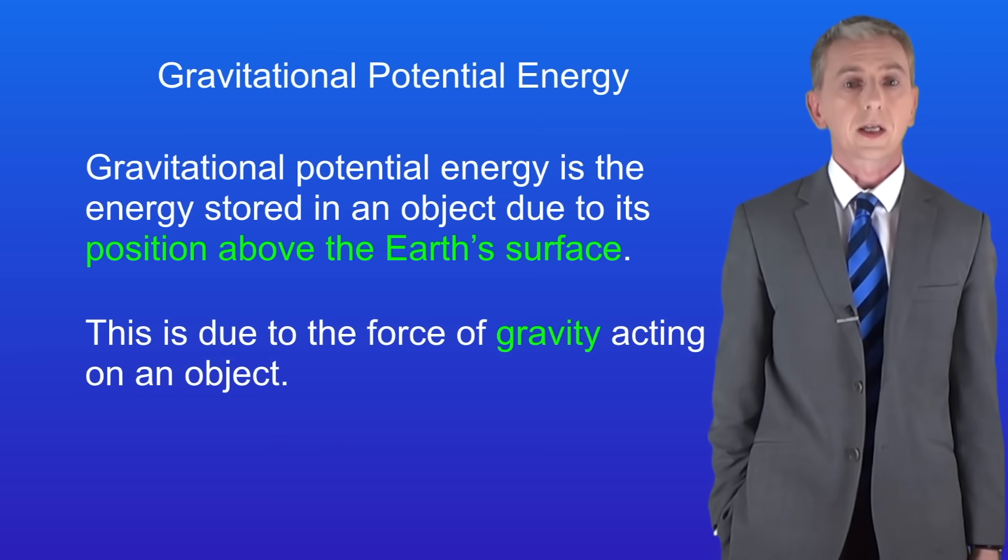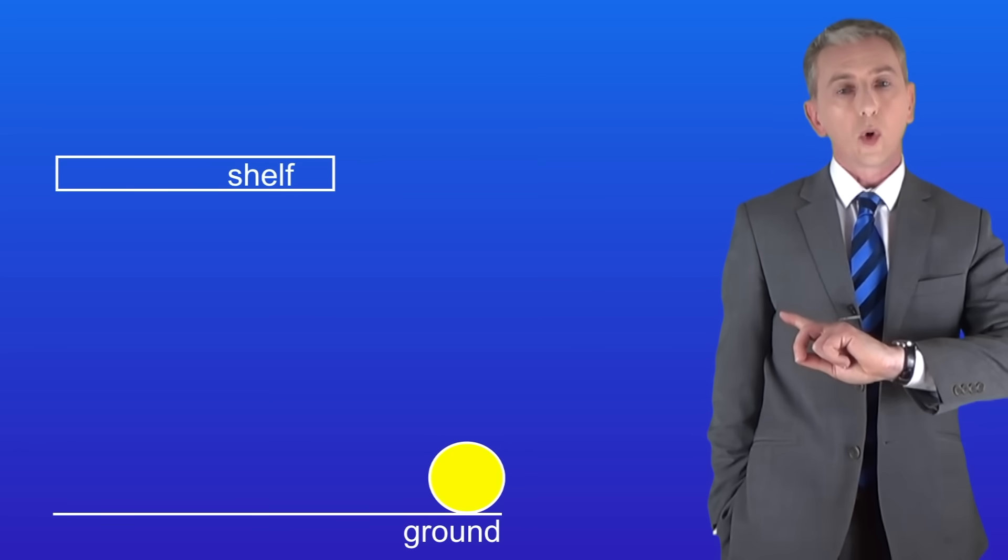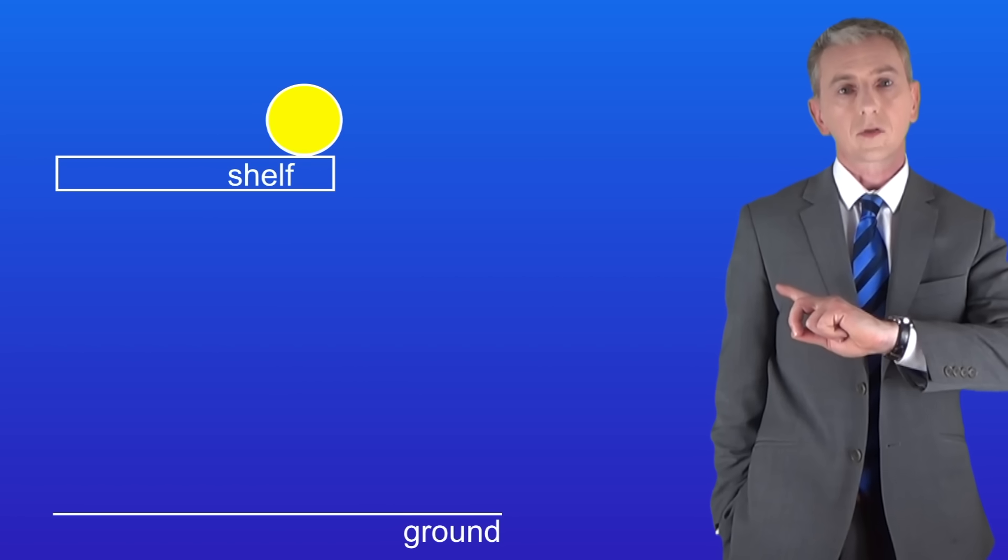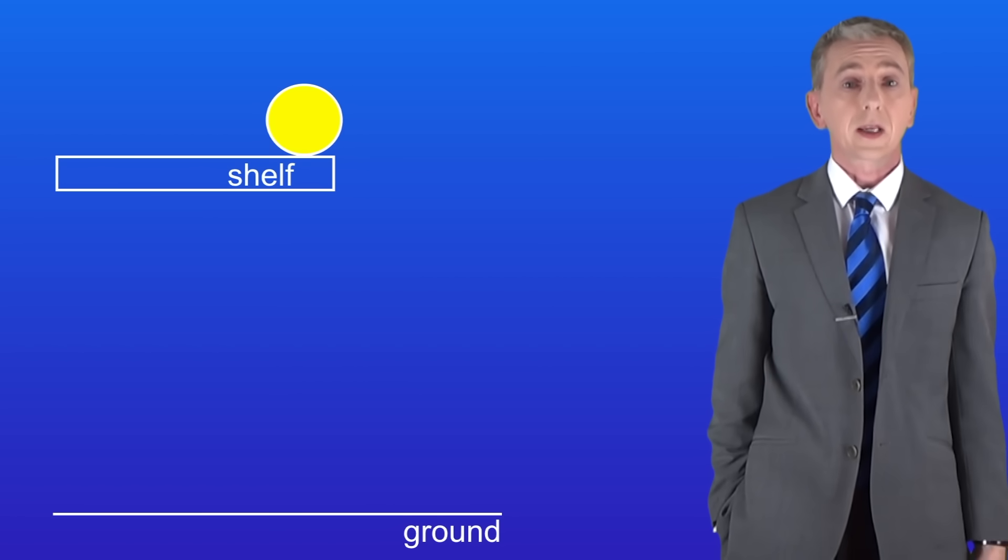We're going to start by looking at a simple example. This shows a ball sitting on the ground. I'm now going to lift the ball off the ground and place it on a shelf like this. To do this I'm using the chemical energy stored in my muscles and I'm changing this to gravitational potential energy in the ball. So the ball now has a store of gravitational potential energy.